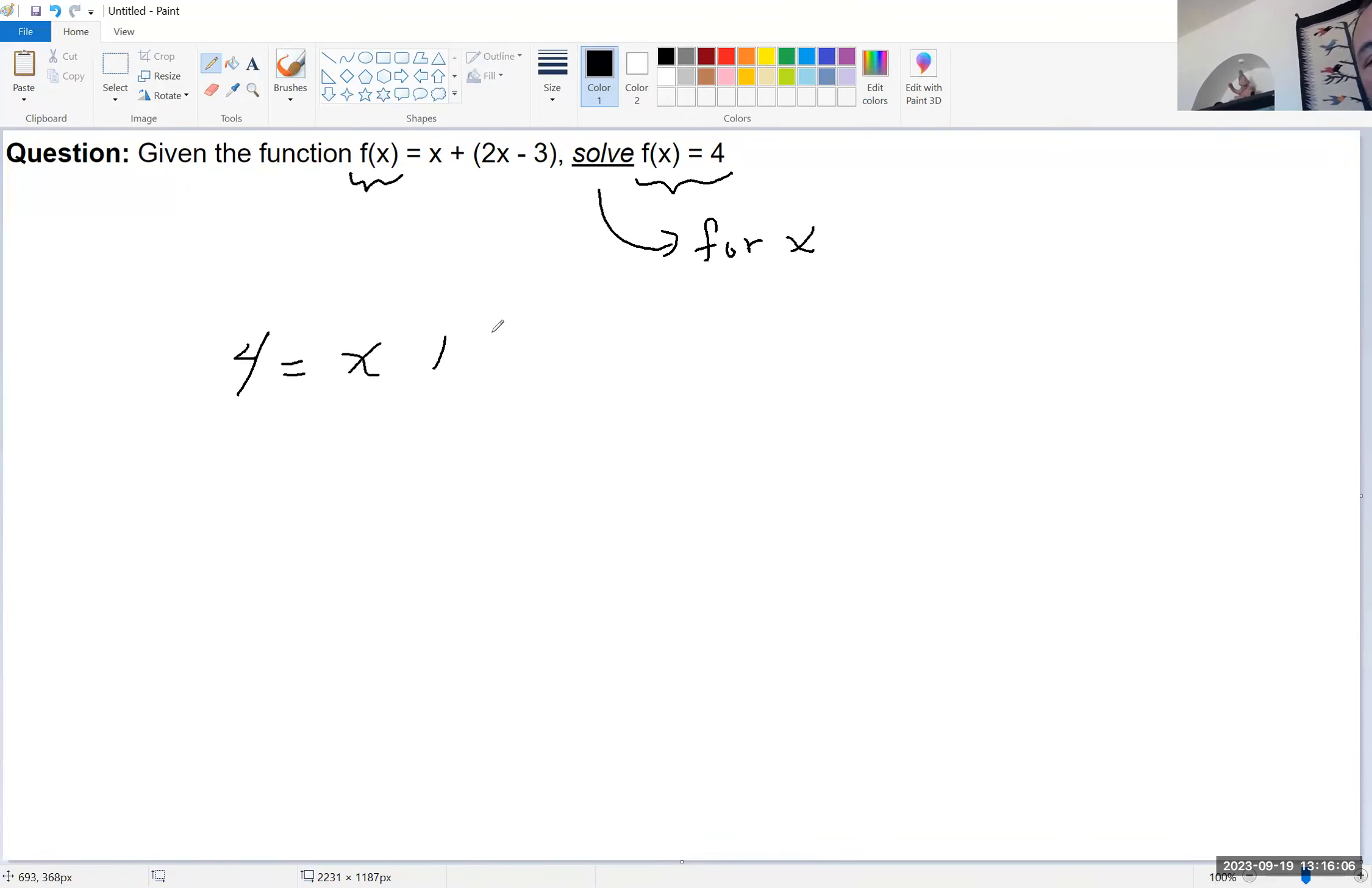Proceed by first copying the right-hand side and then simply solving for x. The first thing we can do is get rid of the parentheses, combine like terms, add 3. 7 is equal to 3x, and the final step is divide by 3.